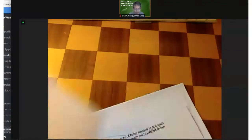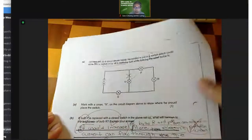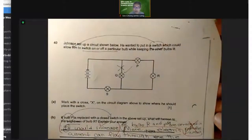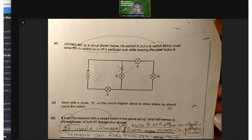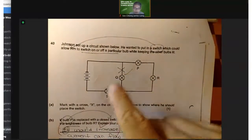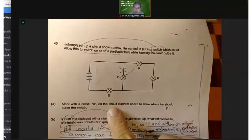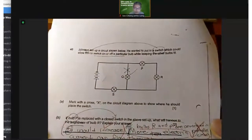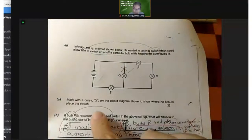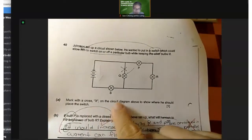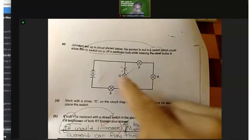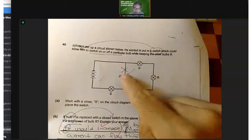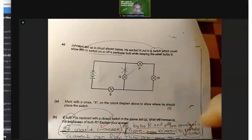Now let's go on to the next question. Johnson set up a circuit shown below. He wanted to put a switch which could allow him to switch on or off a particular bulb while keeping the other bulbs lit. So of course he will place a switch here. This kind of question often students forget to do this, so I'm very glad you didn't forget. Place a cross on the circuit diagram to show where he could place a switch. If you turn this on, all the bulbs will be on. If you turn this off, then only these three bulbs are switched on.